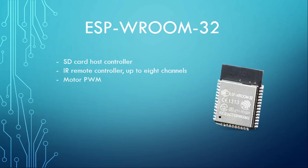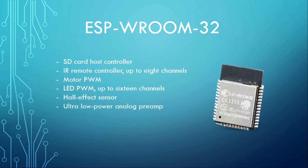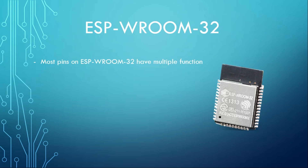It can supply pulse-width modulation for driving motors as well as PWM for flash, and there are up to 16 independent PWM channels. It has an integrated Hall effect sensor, ultra-low power analog peripherals, and multiple real-time clocks. With all these functionalities, the ESP-WROOM-32 has multiple pin functions, and it's worth noting that some of the functions may conflict.